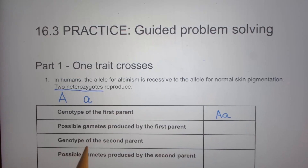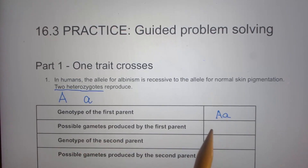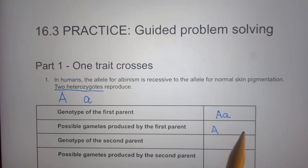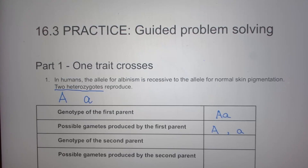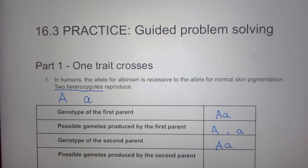The possible gametes produced by the first parent are either capital A or lowercase a — those are the two types. The genotype of the second parent is the same because they are also heterozygous: capital A lowercase a, with possible gametes capital A or lowercase a.